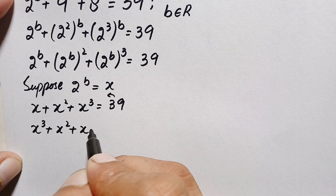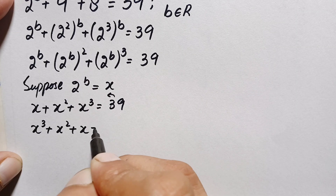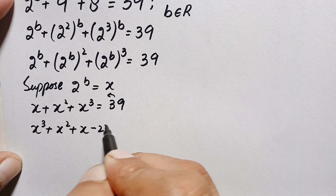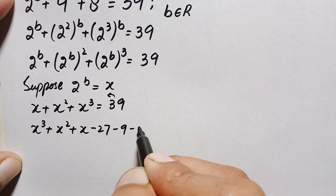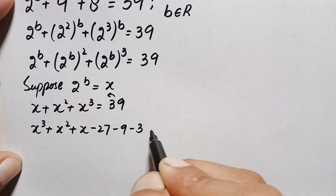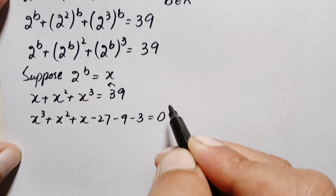Now, negative 39 can be split as negative 27 minus 9 minus 3, which equals negative 39. So the equation becomes x cubed plus x squared plus x minus 27 minus 9 minus 3 equals 0.